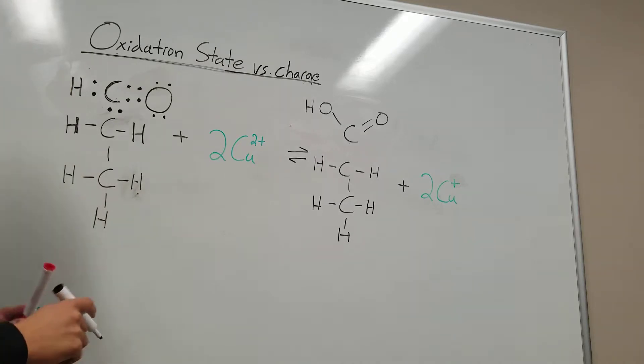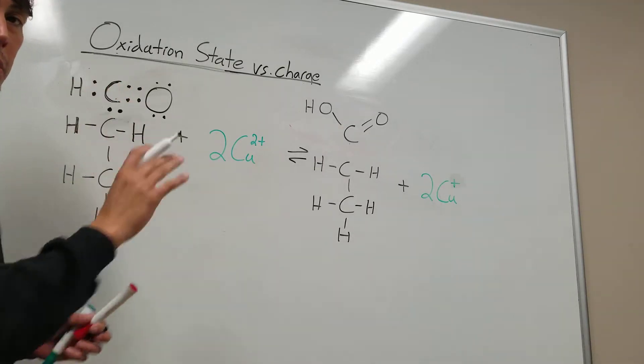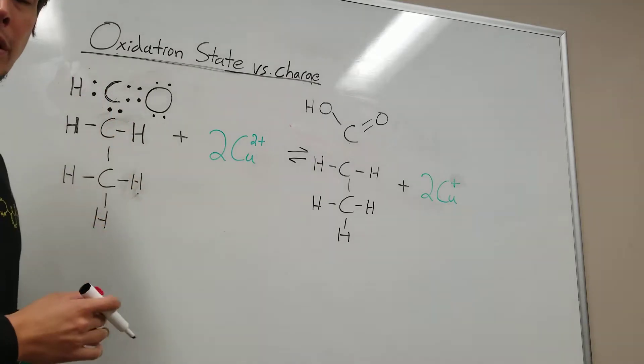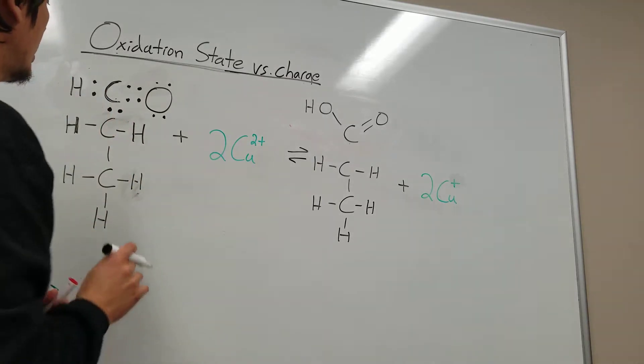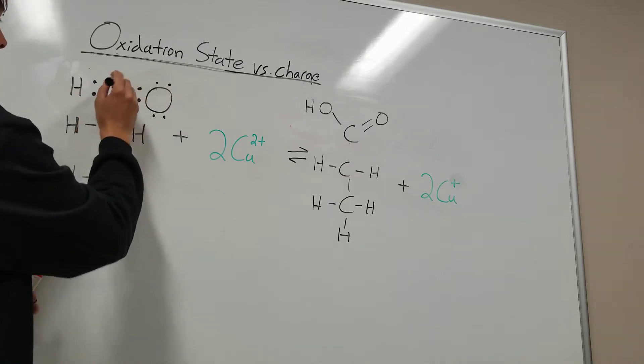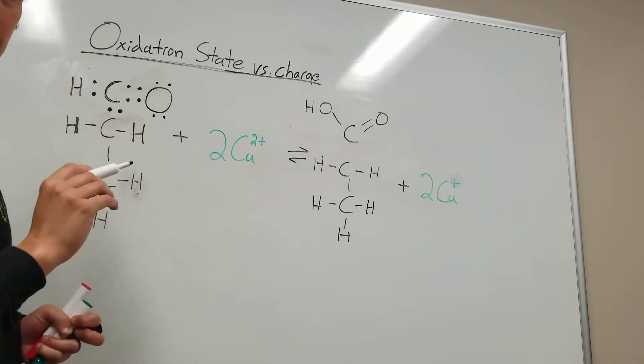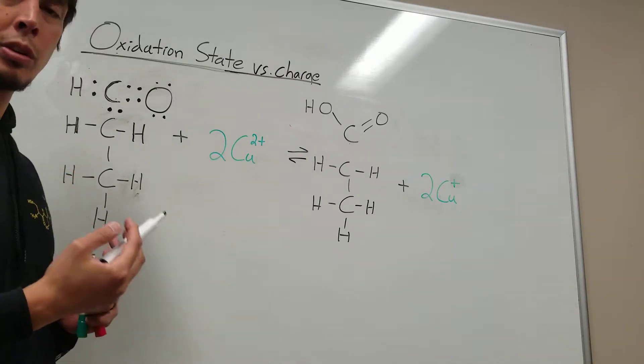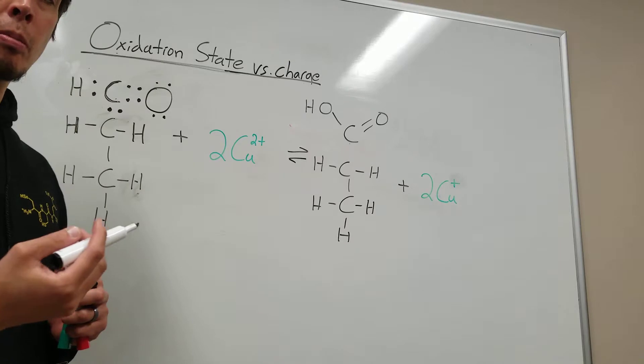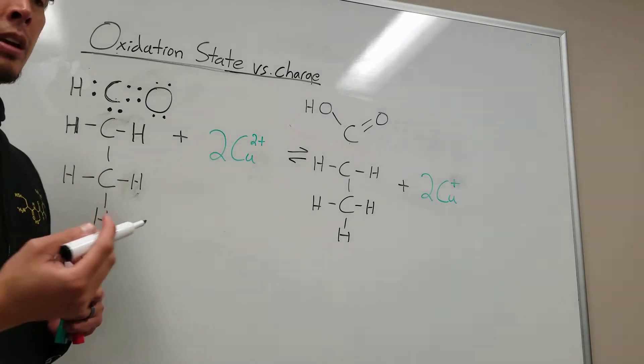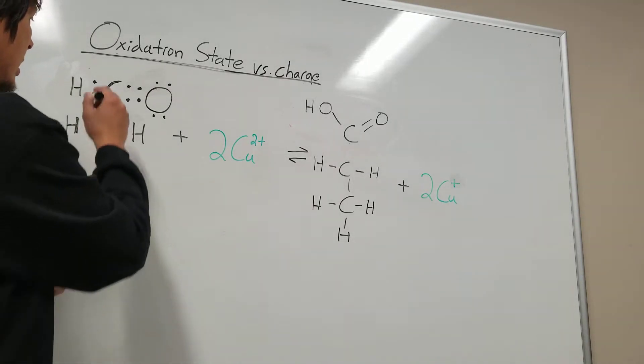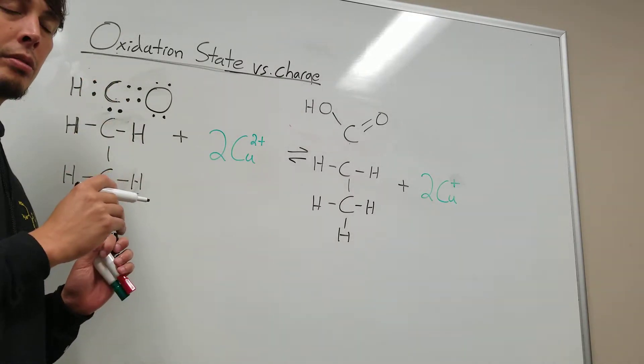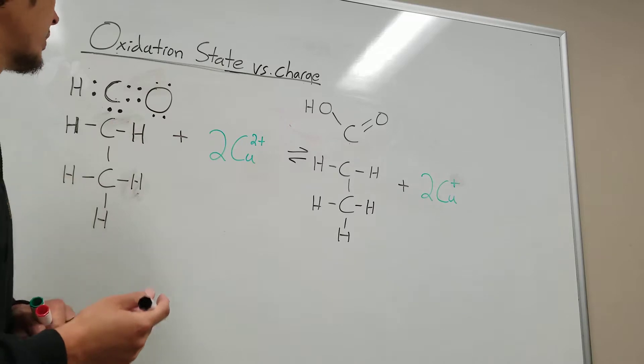Now what you do is you look at the central carbon. In this case, this carbon is what we're trying to figure out the oxidation state of. We're going to look at everything that's bonded to the carbon and make an assessment as to which of the two atoms are more electronegative. Then we assign the electrons in the bond to the more electronegative atom.